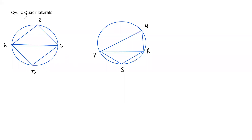Now we have to discuss cyclic quadrilaterals. We previously discussed that this chord AC divides the circle into two parts, and similarly chord PR divides the circle into two parts. Angle PQR is in the major segment and is therefore acute. Angle PSR is in the minor segment and is therefore obtuse — the smaller the segment, the bigger the angle.